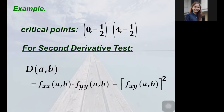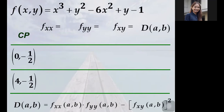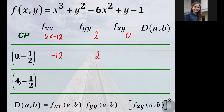After finding the critical points, we apply the second derivative test to determine the nature of the function at these points, so we compute the Hessian determinant. The second order partial with respect to x is 6x − 12, with respect to y is 2, and with respect to x and y is 0. For the first critical point (0, −1/2), the second order partial with respect to x is −12, with respect to y is 2, and the mixed partial is 0, giving a determinant of −24. For the second critical point (4, −1/2), the second order partial with respect to x is 12, with respect to y is 2, and the mixed partial is 0, giving a determinant of 24.